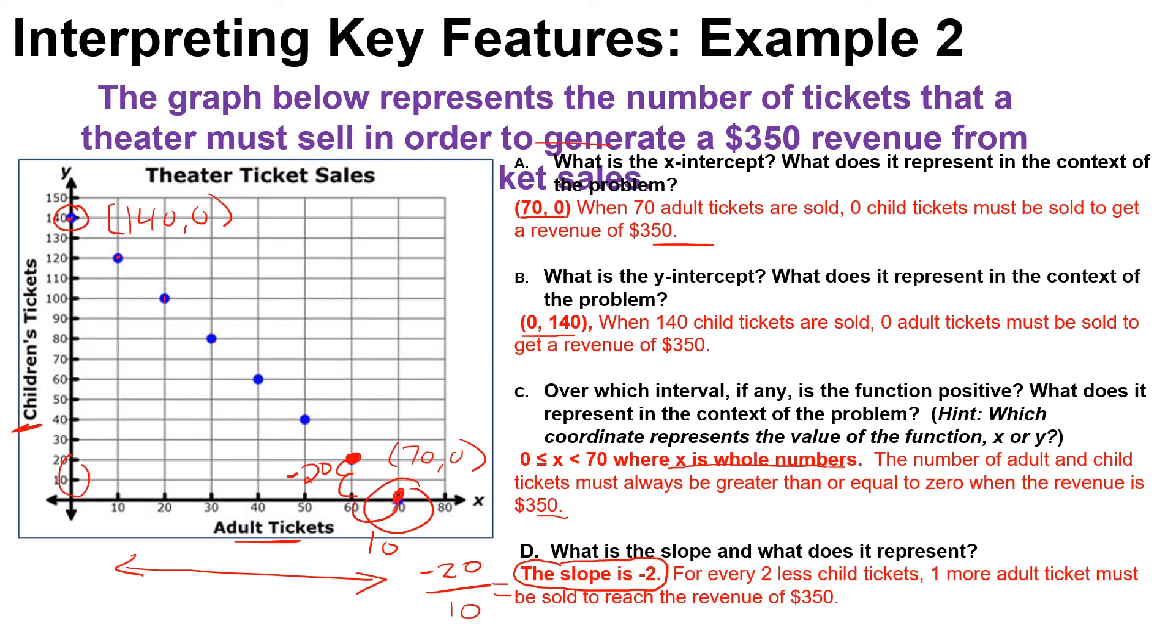And then it says for every two less child tickets, one more adult ticket must be sold to reach the revenue of $350. So that is what the slope represents. We've interpreted some key features of this graph with theater ticket sales.